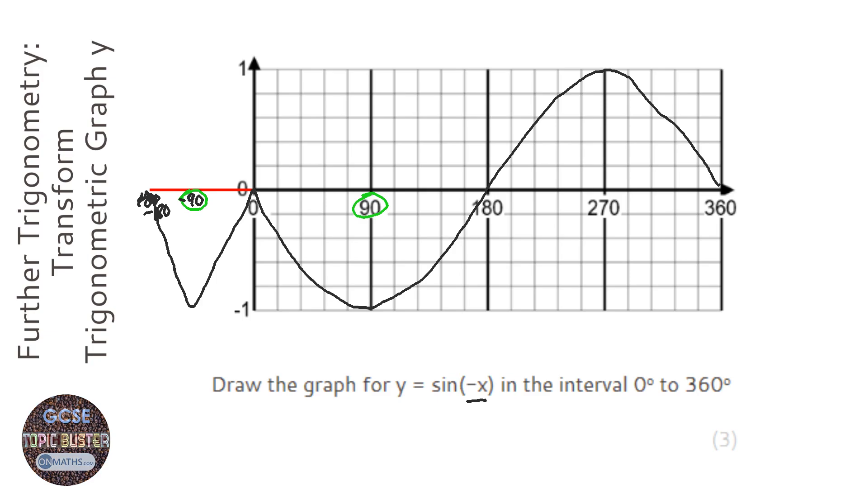Now this kind of looks like it's been reflected in the x-axis, but it hasn't. It's been reflected in the y-axis. It's actually a complete reflection in this axis here. So if you have a negative here, it's reflected in the y-axis. It's just the symmetry of the graphs make it look like it's been reflected in the x-axis. But if you were doing the cosine one, it would look identical because cosine is symmetrical along the y-axis.